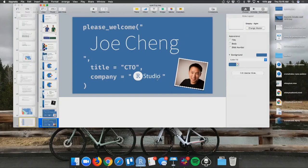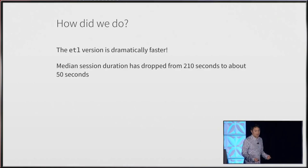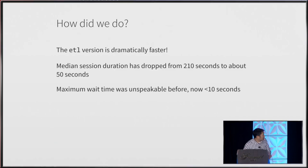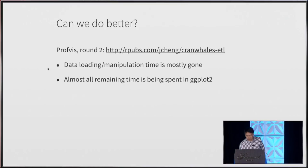Let's summarize how we did. ETL is clearly much faster. The median session duration dropped from 210 seconds to about 50 seconds — a huge difference. The maximum wait time was previously unspeakable, now less than 10 seconds. But 10 seconds is good, not amazing. Can we do better? We start our second round of profiling. Without showing the profiling this time, it basically shows that almost all the remaining time is in ggplot plotting — several hundred milliseconds per plot.